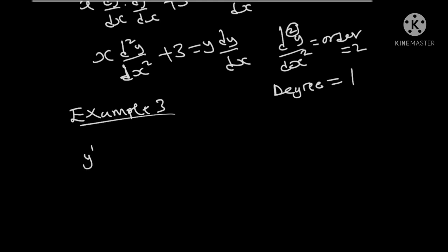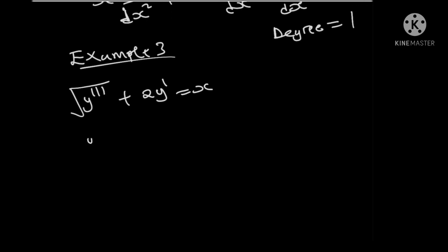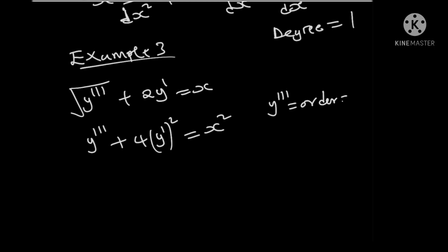Example 3: suppose we have the square root of y triple prime plus 2y prime equals to x. To get the order and degree, we remove the radical by squaring all terms, giving y triple prime plus 4(y prime) squared equals to x squared. The highest differential coefficient is y triple prime, which is the same as d cubed y over dx cubed. Therefore, the order is 3 and the degree is 1, since the power of y triple prime is 1.